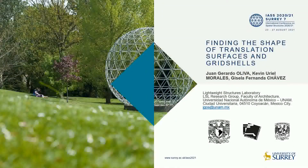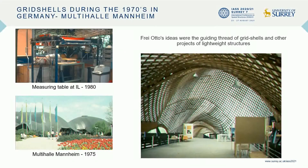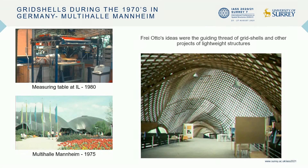Grid shells had a significant development during the 1970s in Germany. The design and construction of the Multihalle Mannheim in 1976 is one of the most emblematic grid shells known to date. A group of renowned structural designers led by Professor Friotto at the University of Stuttgart managed to cover an up to 60 meters wide span with 20 centimeters maximum thickness. At that time, precise physical models made with hanging nets were unavoidable for the form-finding process.